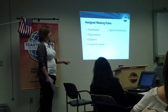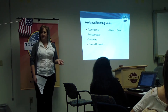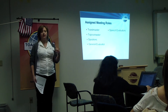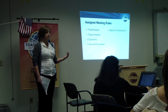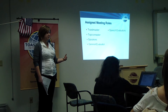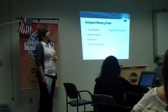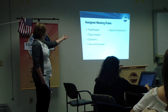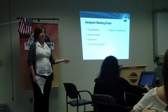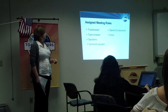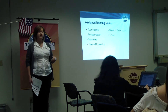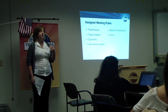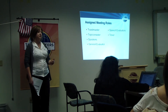A general evaluator conducts the evaluation portion of the meeting that comes toward the end. The general evaluator's job is to evaluate the meeting and to call on other people who have feedback for all of our members, such as the grammarian or the vote counter. They do not evaluate the speakers — that's the job of the speech evaluator. So we have as many evaluators as we have speakers. Those people provide encouragement and feedback from their own personal perspective and encourage the speakers to improve and strive for the next time.